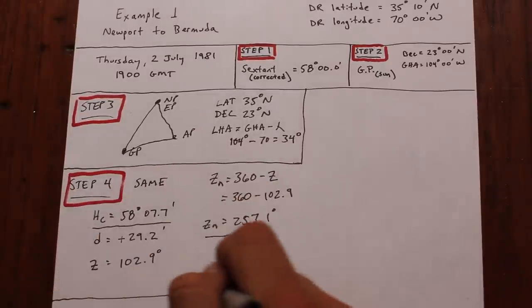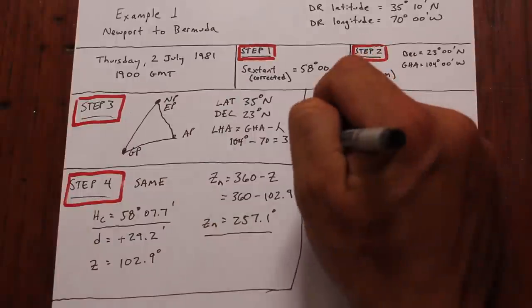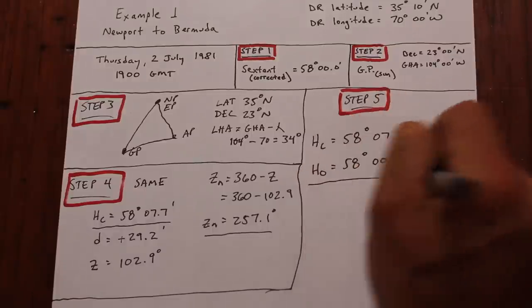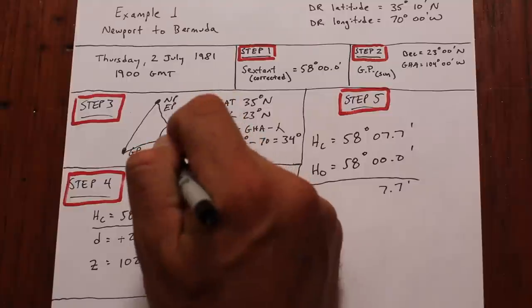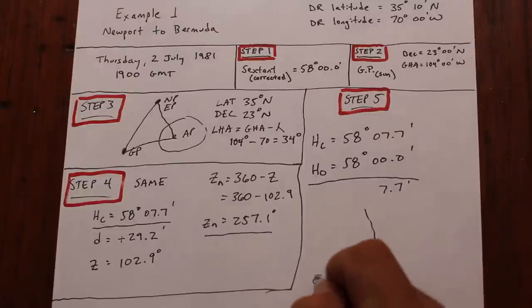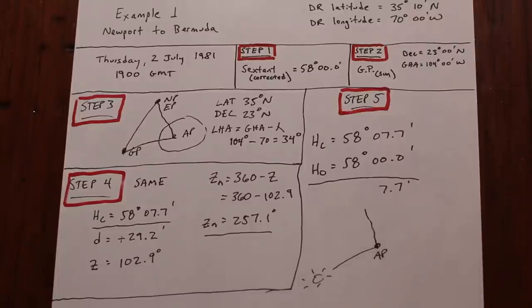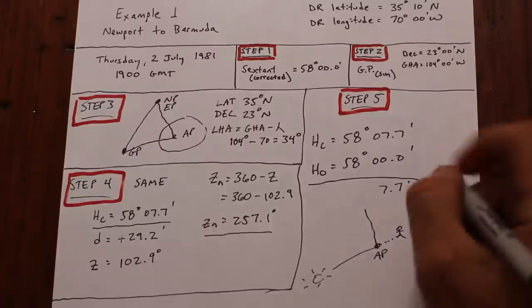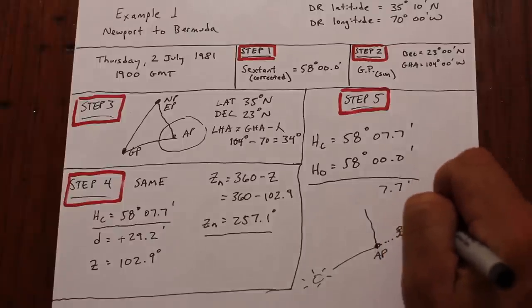Once we've got our Zn, or our azimuth line to the sun, we can move on to the fun part, step five. In this step, we'll compare the calculated height to the measured height and note the difference. When we zoom in on the bottom right portion of the triangle, we can think about it like this. If the sun is lower in the sky than predicted, we are farther to it than predicted, and vice versa. One is CGA, for computed greater away, and the other is HO more towards. In this example, we're away, and all we have to do is plot.